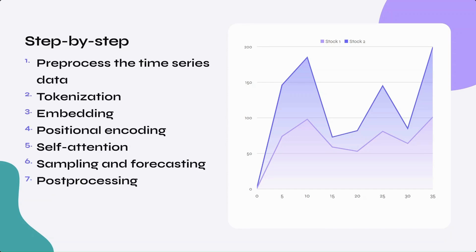What are the steps involved in implementing LLM methodology to time series forecasting? First, preprocess the time series data. Second, tokenization. Third, embedding. Fourth, positional encoding. Fifth, self-attention. Sixth, sampling and forecasting. And lastly, post-processing.